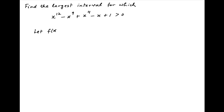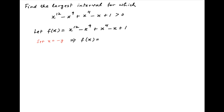Let's define the function f equal to the left-hand side of the given inequality. This is equal to x raised to the power 12 minus x raised to the power 9 plus x raised to the power 4 minus x plus 1. Now set x equal to minus y, therefore f(x) equals f(minus y), which equals y raised to the power 12 plus y raised to the power 9 plus y raised to the power 4 plus y plus 1.